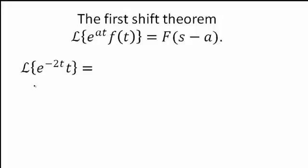Now we do know what the Laplace transform of t is. We can look this up on the table. This is 1 over s squared. And with this knowledge, we can quickly find the Laplace transform of e to the negative 2t times t.